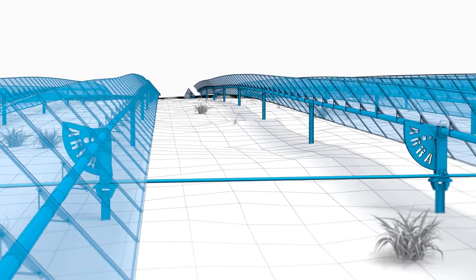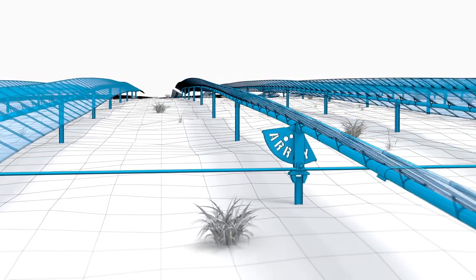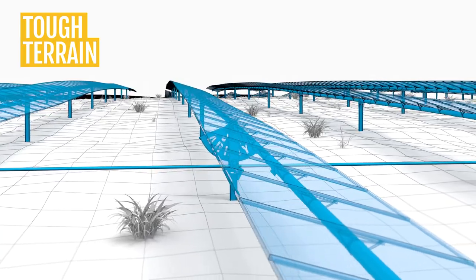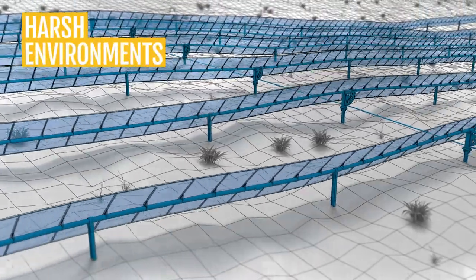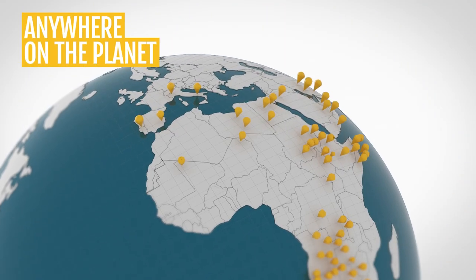Omnitrack is engineered to be the most cost-effective channel of sustainable energy on the planet. Tough terrain? Harsh environments? Anywhere on the planet.